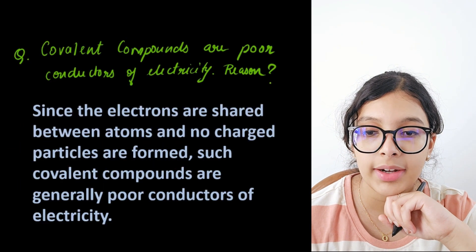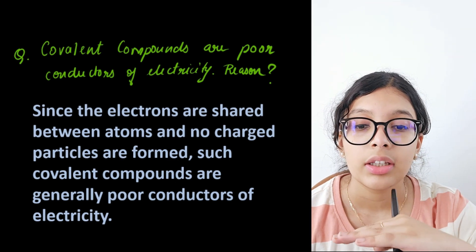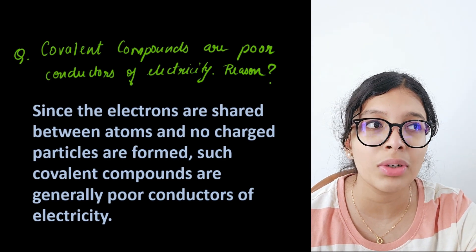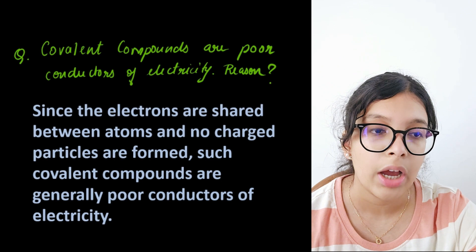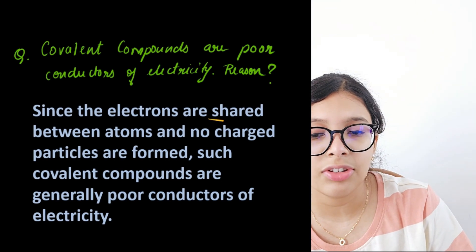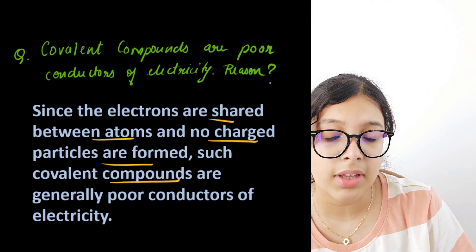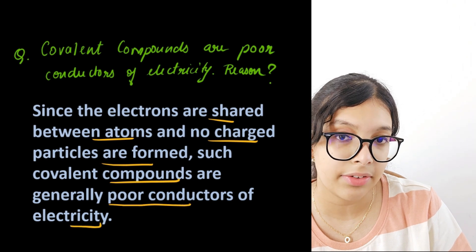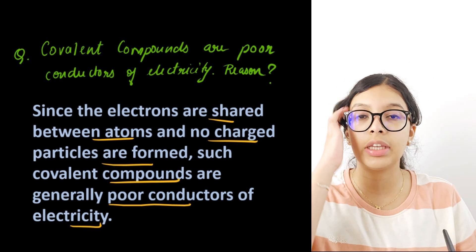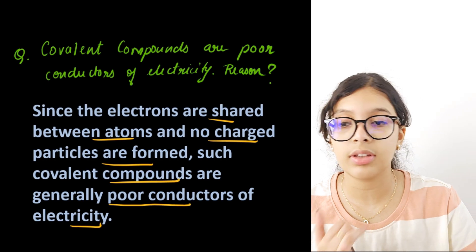Second question: covalent compounds are poor conductors of electricity — give reason. In covalent bonds we don't deal with free electrons or ions. Since electrons are shared between atoms and no charged particles are formed, such covalent compounds are generally poor conductors of electricity.